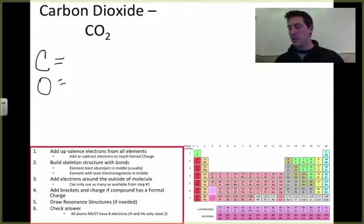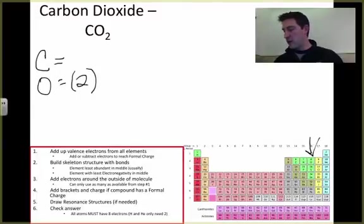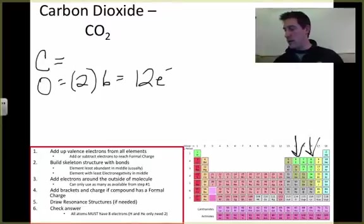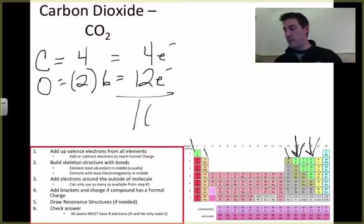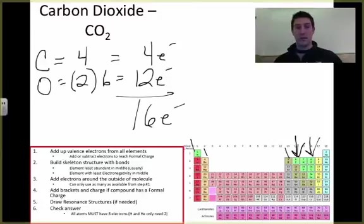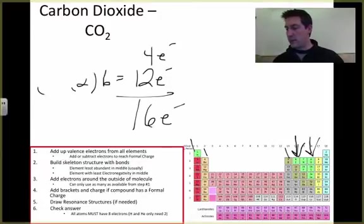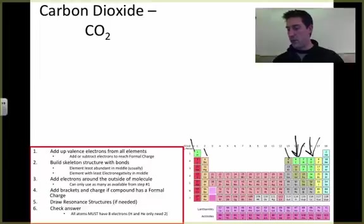So again, we added up. We've got carbon, we've got oxygen. I've got two oxygens. Oxygen is right over here, it's got six valence electrons, so I get 12 electrons from oxygen. Carbon is right here, one two three four, so it's got four. I'm gonna move that four over here just to make it easy. When I add this up, I've got 16 electrons to build this with. Now I'm gonna get rid of this just so I have a little more room.